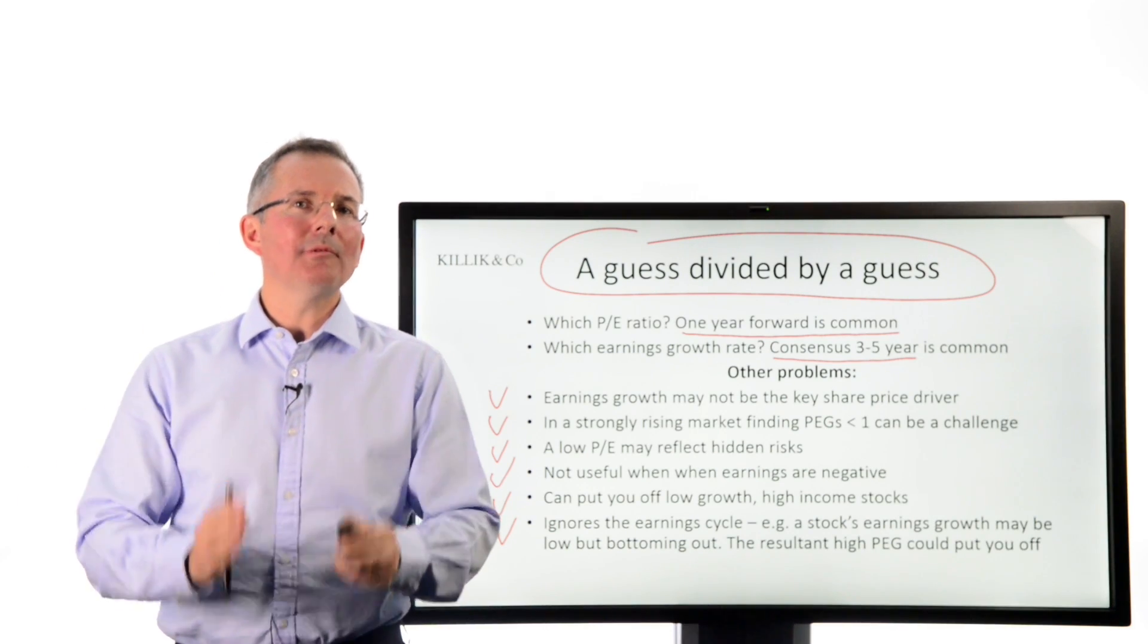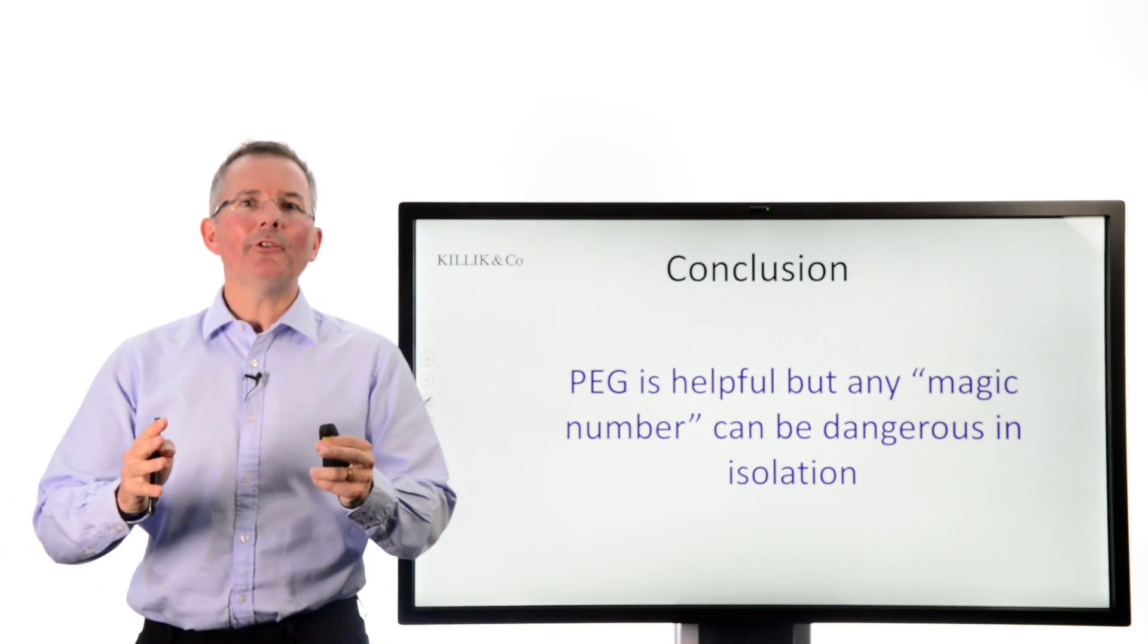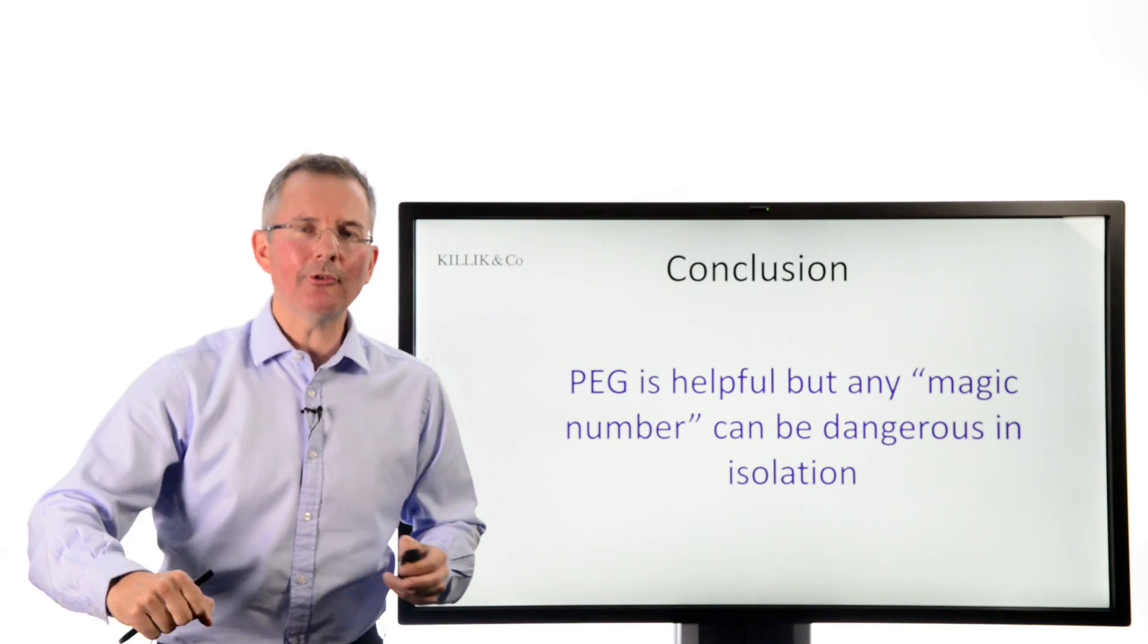Now, if you didn't get all that, it doesn't matter. I'm just saying that by itself, this is not a number you can necessarily, as some people would like you to, just go bang, there it is, low PEG, cheap stock, high PEG, expensive stock, and just trade on that basis.